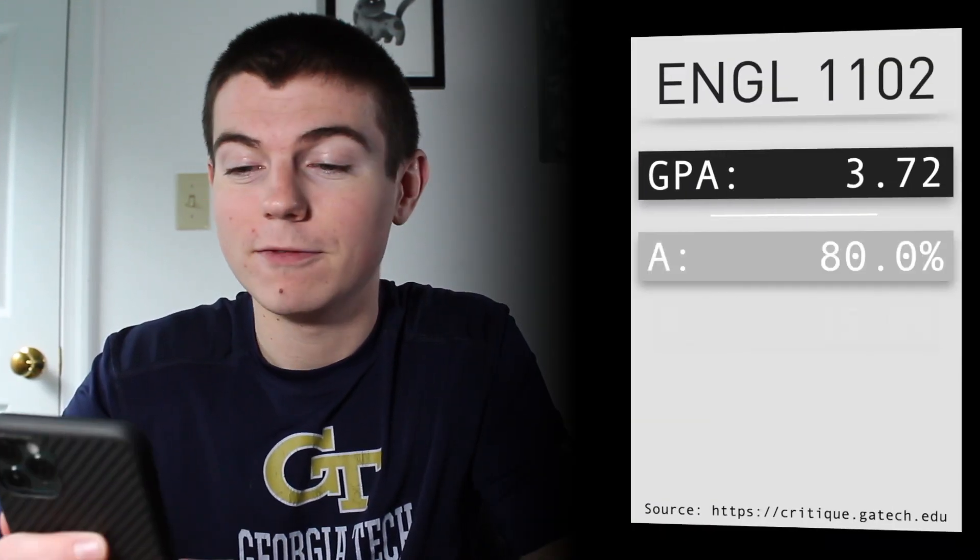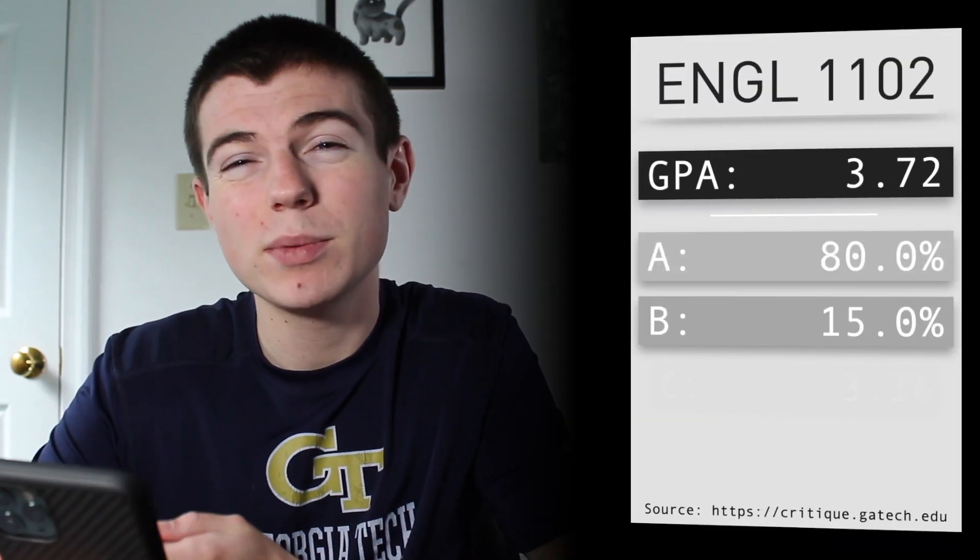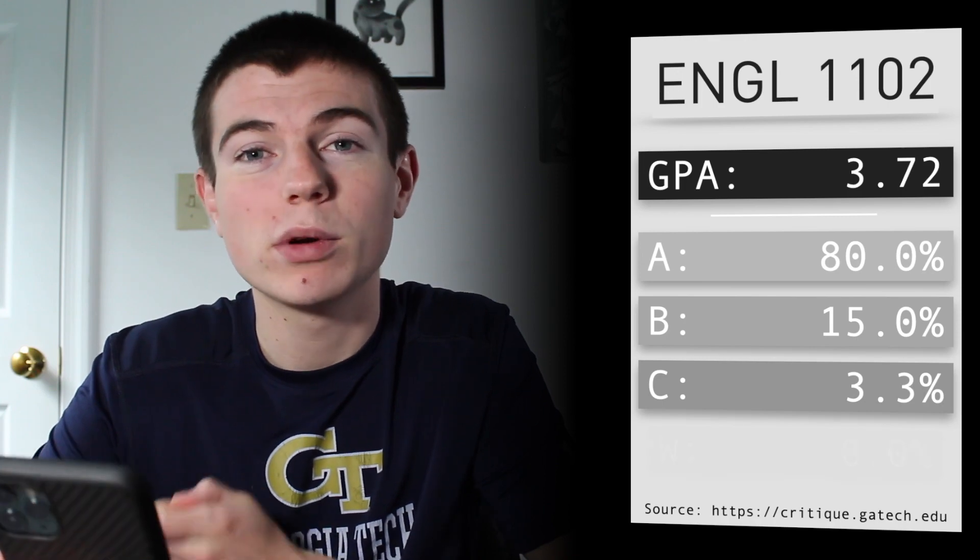Next up is one of my all-time favorite college classes — and if you've watched my other videos, you've probably heard me rave about this before. It's English 1102 with Dr. Stern. Every single English class at Georgia Tech has a different topic it's focused on. In this case, mine was poetry, painting, film, and music for New York City from the 1960s till present day. This was a three-credit class on Mondays, Wednesdays, and Fridays. The GPA was a really healthy 3.72 — 80% of students got an A, 15% got a B, 3.3% got a C, and no one withdrew.